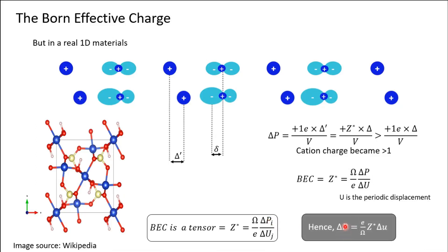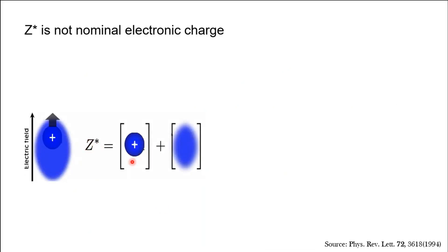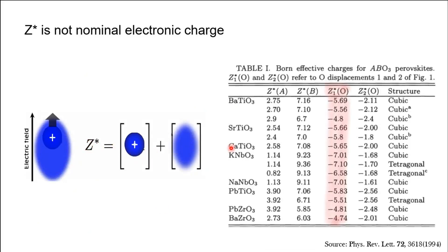To calculate polarization from DFT, we note that the Born effective charge is a combination of point charge as well as the electronic charge distribution. A PRL paper calculated the Born effective charges for perovskite-type materials. We know oxygen has a formal charge of minus two, but the calculated Born effective charge is approximately minus five, six, or seven — almost two to three hundred percent greater than the formal charge — making Born effective charge very significant.